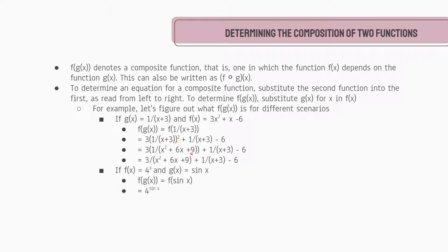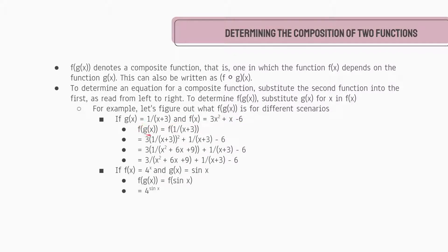From here, since we like to simplify all of our functions, we're going to do that. First we expand the brackets — we don't want to leave the squared term as-is — so we get 3 times (1/(x² + 6x + 9)) plus the remaining terms. Now we have 3 times a fraction, so we multiply the constant by the numerator and get 3/(x² + 6x + 9) + 1/(x+3) − 6. You can check this by typing g(x) and f(x) into Desmos and graphing f(g(x)) to verify.